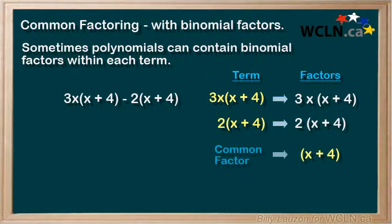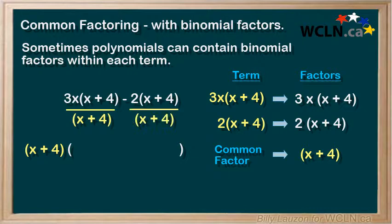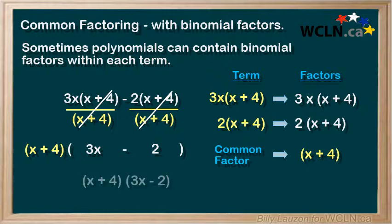So what we can do is pull the x plus 4 out in front and leave a bracket for our leftovers. We take x plus 4 as the common factor and divide it into each term. The x plus 4s will cancel in both expressions and leave us with 3x minus 2 in the brackets. Tidying it up, we will have x plus 4 times 3x minus 2 as our factored expression.